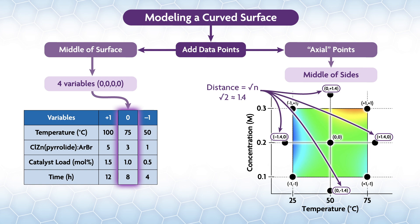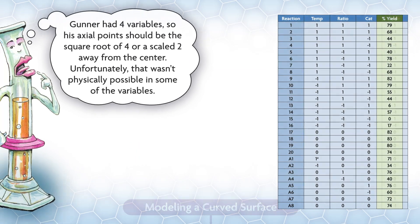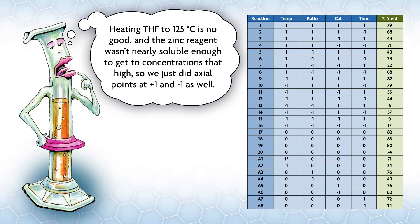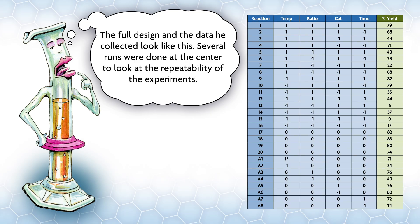For the 2-variable problem in the last video, that's the square root of 2 or about 1.4 from the center. So the axial points in the middle of the faces were 0 plus 1.4, 0, negative 1.4, plus 1.4, 0, and negative 1.4, 0. Gunner had four variables, so his axial points should be the square root of 4 or a scale 2 away from the center. Unfortunately, that wasn't physically possible for some of the variables. Heating THF to 120 degrees C is no good, and the zinc reagent wasn't nearly soluble enough to get it to concentrations that high. So we just did axial points at plus 1 and minus 1 as well. The full design and the data he collected looked like this. Several runs were done at the center to look at the repeatability of the experiments.